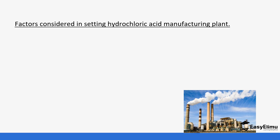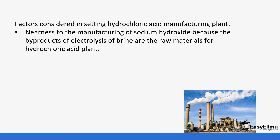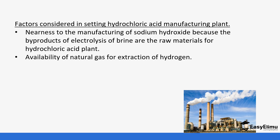When setting up a hydrochloric acid manufacturing plant, several factors are considered. It needs to be located close to an electrolysis-of-brine plant, since most raw materials come from the electrolysis of brine (sodium chloride). There also needs to be availability of natural gas, because hydrogen is obtained from it.